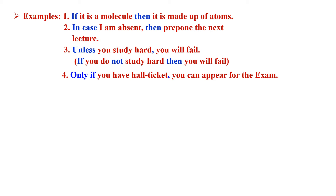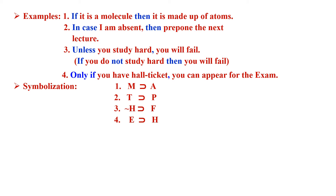Fourth example: 'Only if you have a hall ticket, you can appear for the exam.' Here, 'only if' with comma is the connective. The antecedent will be 'you can appear for the exam' and the consequent will be 'you have a hall ticket.' Now for symbolization: the first is symbolized as M horseshoe A; the second as T horseshoe B; the third, since the antecedent has 'not' in it, as curl H horseshoe F; and the fourth as E horseshoe H.